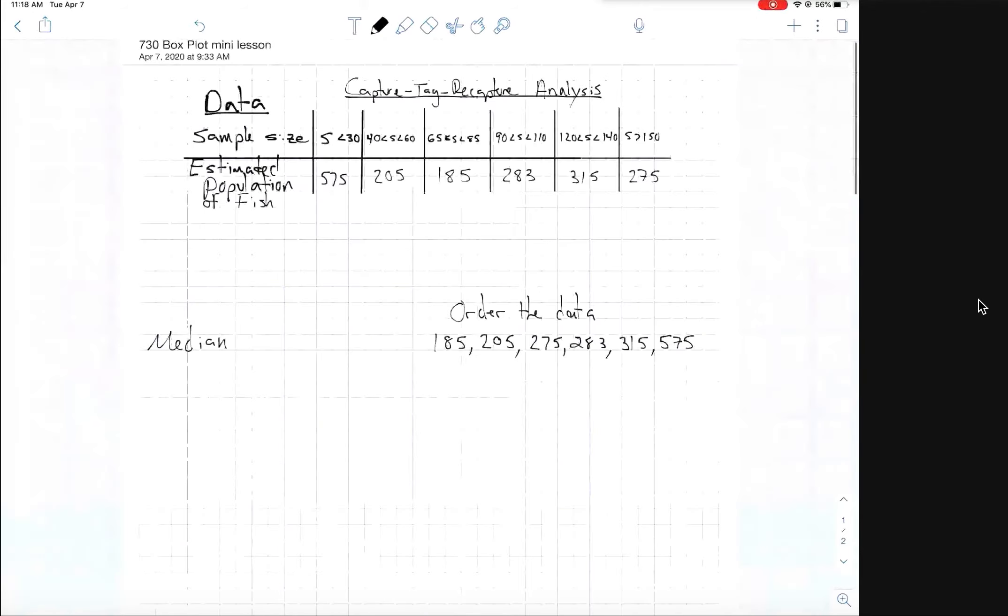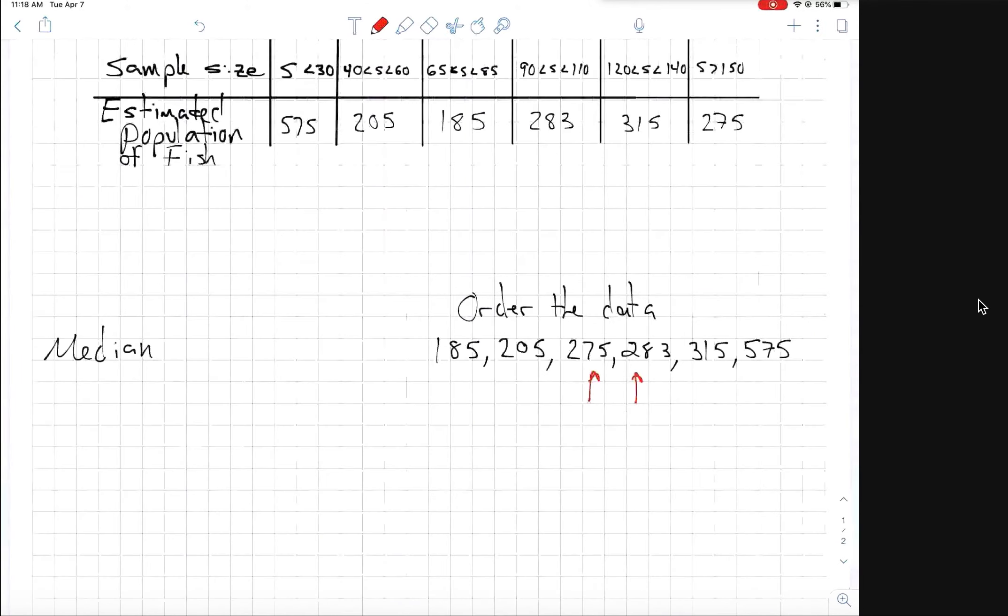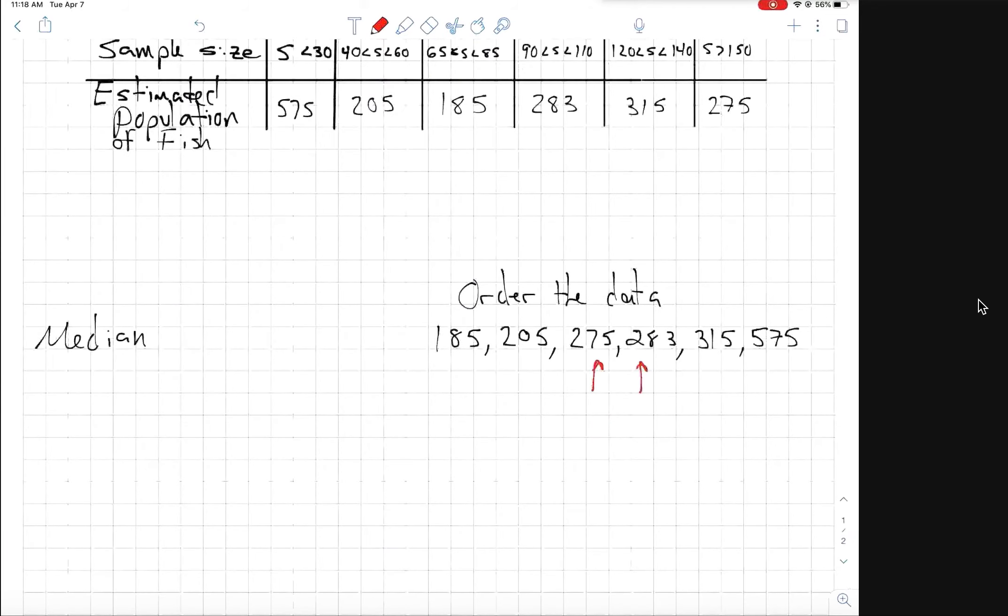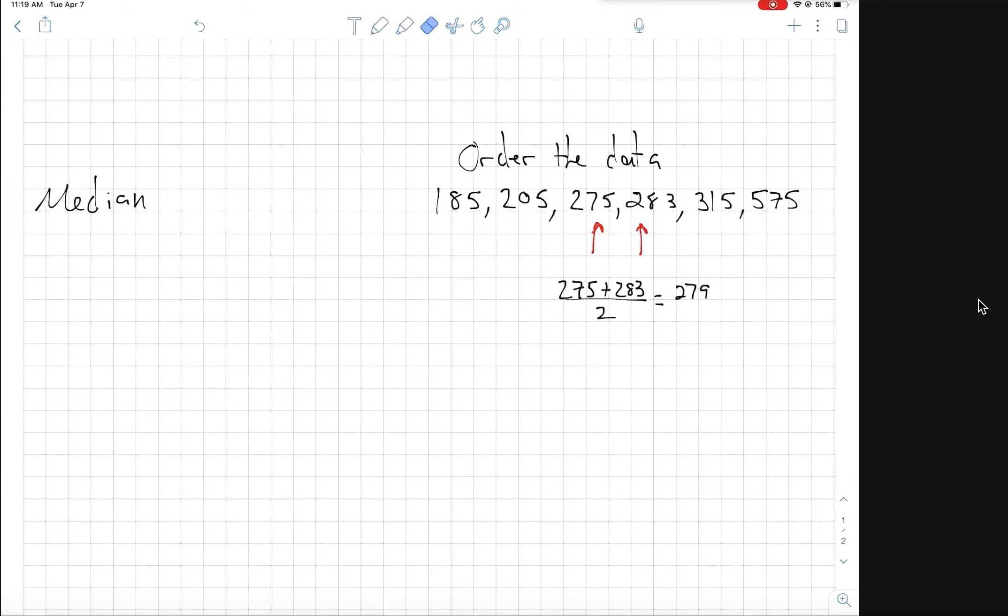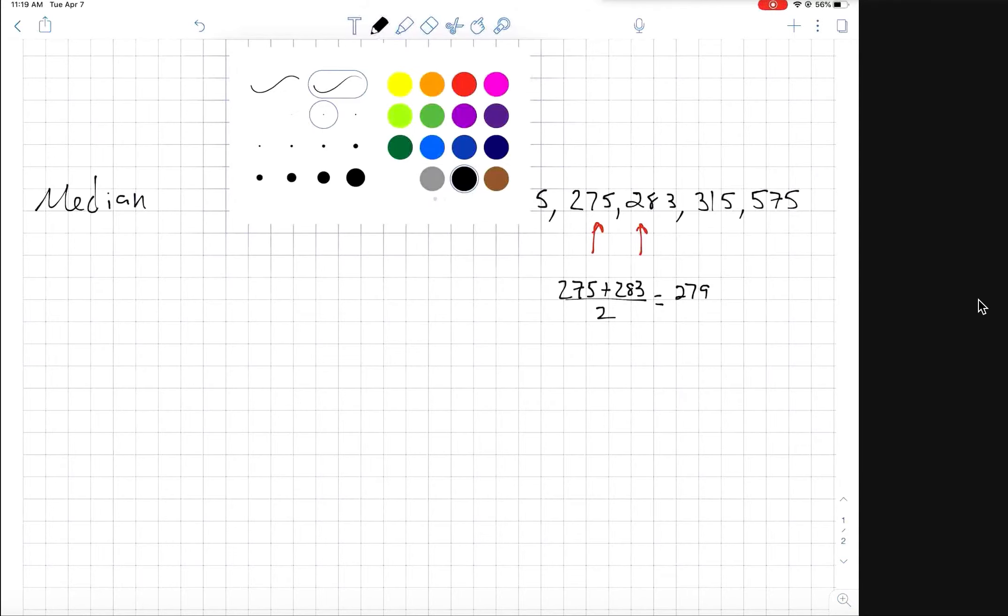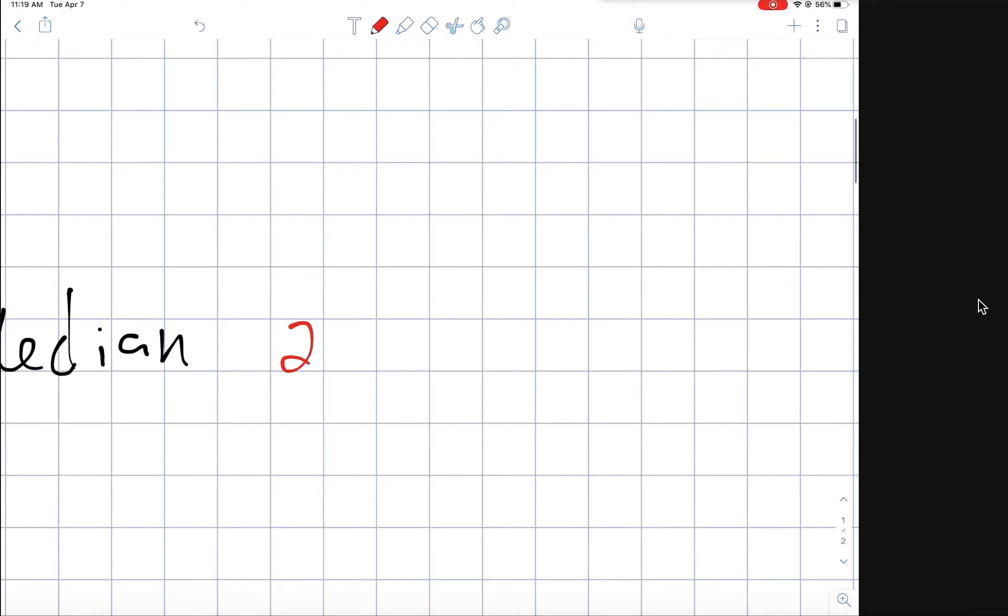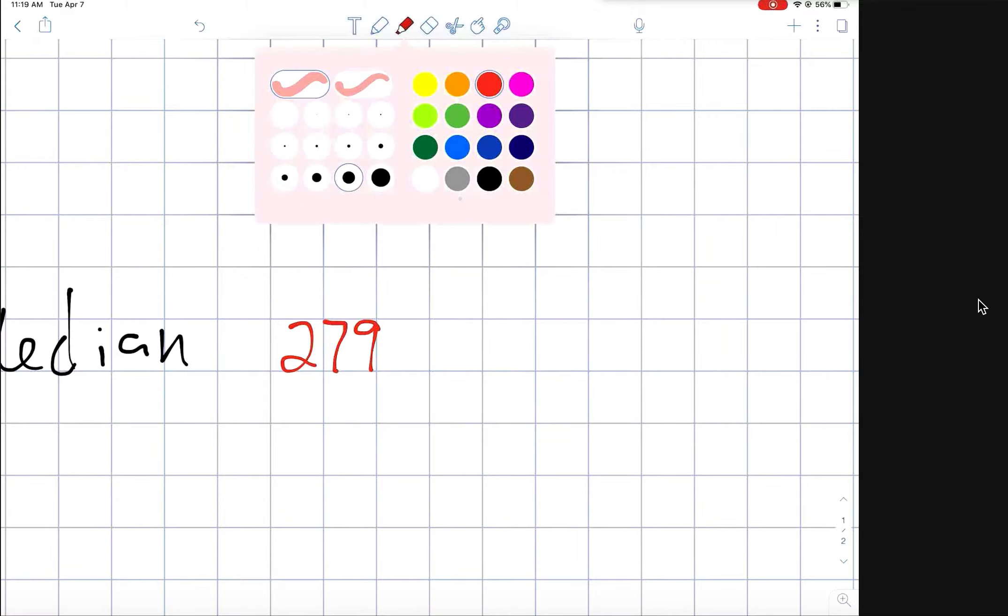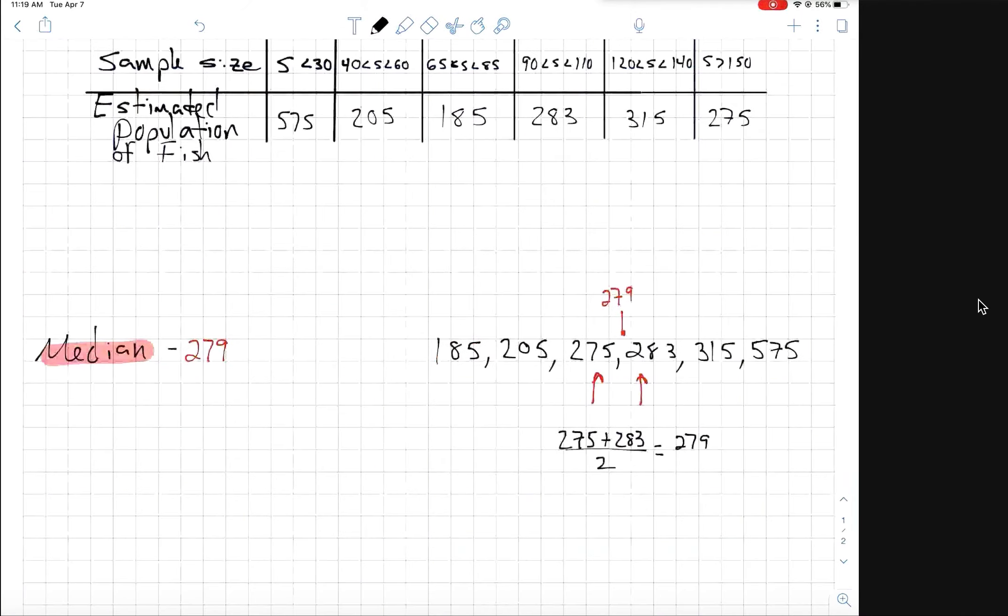Now I'm hearing that some students are saying we have to do something with both of these numbers, 275 and 283. I read that they want me to add 275 and 283 and find the average of these two numbers, which is 279. So now we have our median.